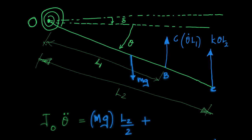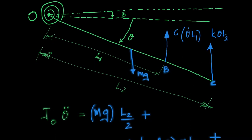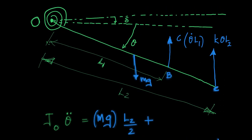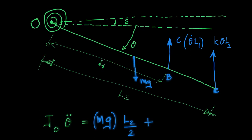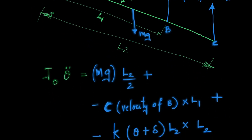Marking all forces acting on the bar: here is the spring force, here is the force due to the damper, and there will also be a moment from the torsion spring resisting the motion. Using Newton's second law in rotation, since the bar undergoes pure rotation about the pivot point, we write the equation governing this system's motion.